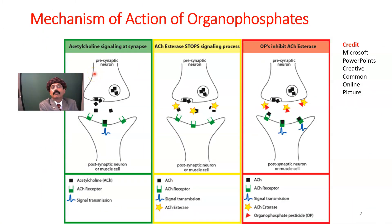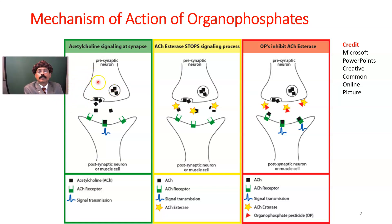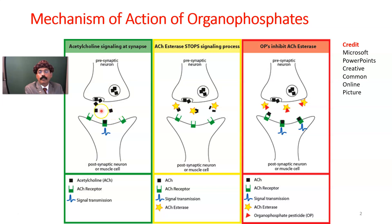So what is the mechanism of action? Acetylcholine is released from the presynaptic neuron into the synaptic cleft, where it attaches to the postsynaptic receptor. There will be signal transmission, and after a certain time, acetylcholine should be destroyed by acetylcholine esterase. That is the normal mechanism.